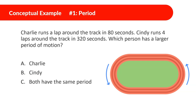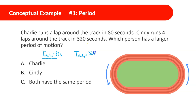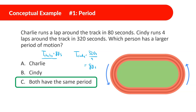Charlie runs a lap around the track in 80 seconds. Cindy runs four laps in 320 seconds. Which person has a larger period? Charlie's period is 80 seconds. For Cindy, 320 seconds divided by 4 laps equals 80 seconds. So both have the same period of 80 seconds.